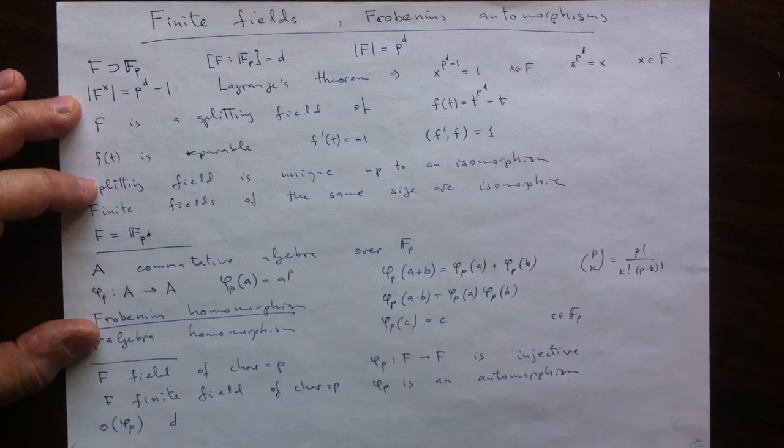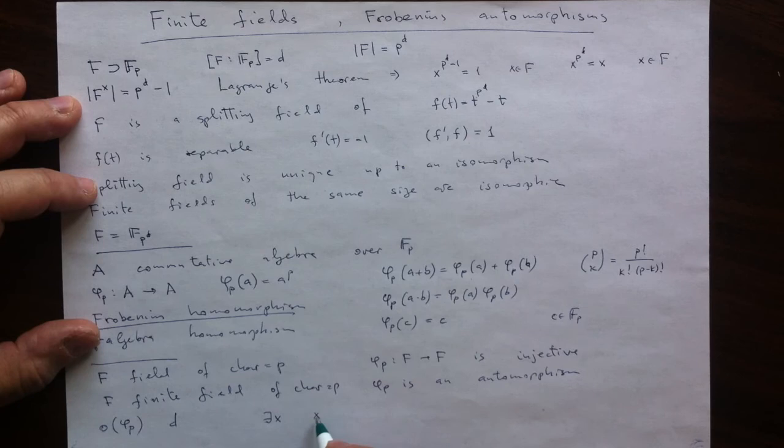But we can see that no smaller power is, because we will definitely have elements which raised to the smaller than d power, say d minus 1, are not equal to x. And so any other power, any smaller power, will also not be equal to x. And that is simply because if all elements are satisfying the smaller identity, then they will have to be from the smaller degree extension just by this argument. So the answer for the order of this element in the automorphism group is d.